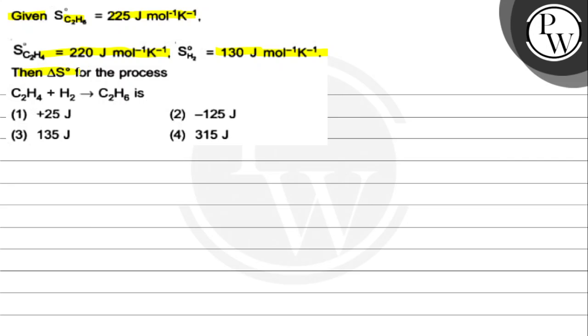Then ΔS° for the process C₂H₄ + H₂ → C₂H₆. The options are: (1) +25 joule, (2) -125 joule, (3) 135 joule, and (4) 315 joule. So the key concept—